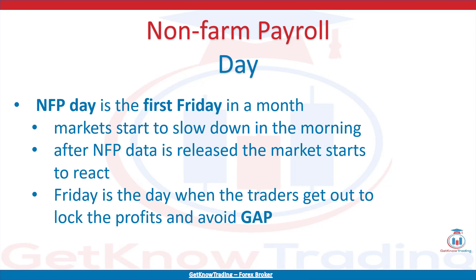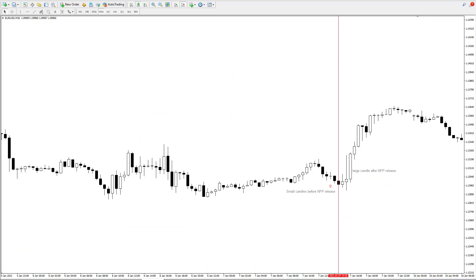The NFP day is the first Friday of a month when the non-farm payrolls are published. It is the day when the whole market is waiting for the results because of the impact on the markets. When the NFP time comes, you can be sure that the market will react a lot and the price of currency pairs will fluctuate. On the day when the non-farm payrolls are published, the market starts to slow down in the morning UK time, preparing for the news. If you check around 1 or 2 hours before NFP, the forex market starts to slow down waiting for the data.